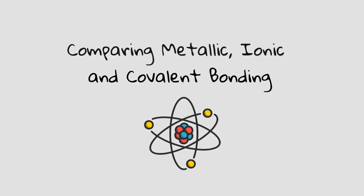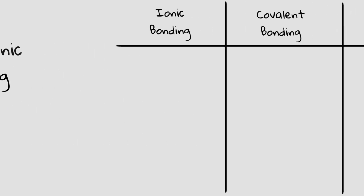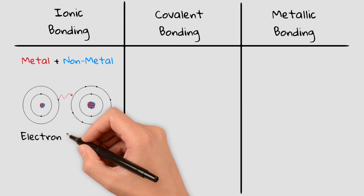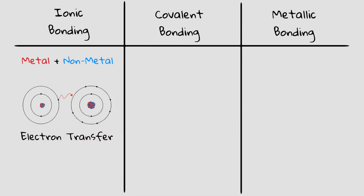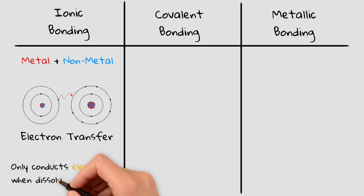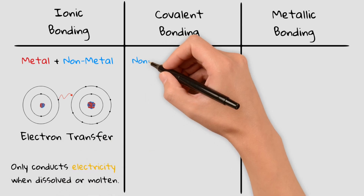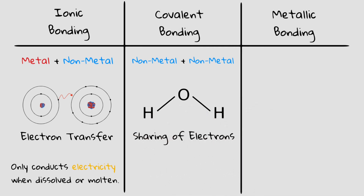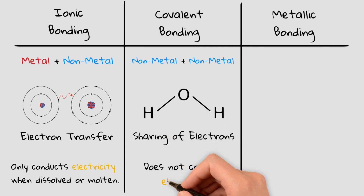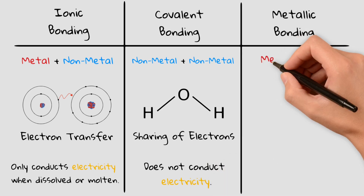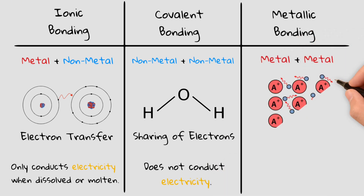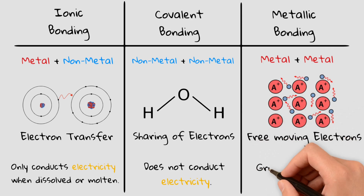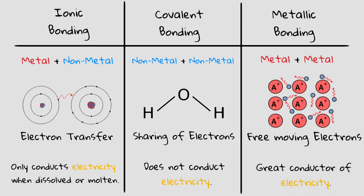How does metallic bonding compare to ionic and covalent bonding? Ionic bonding happens between metals and nonmetals, where electrons are transferred to form charged ions — like sodium chloride — and it only conducts electricity when dissolved or molten. Covalent bonding happens between nonmetals where electrons are shared, forming molecules like water; most covalent compounds don't conduct electricity. Metallic bonding happens only between metals — instead of transferring or sharing electrons, metals have a sea of delocalized electrons, making them great conductors in any state, which is why copper is used in wiring.